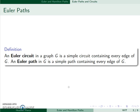So this is the idea of an Euler path. An Euler circuit in a graph is a simple circuit that contains every edge, and an Euler path is a simple path containing every edge.